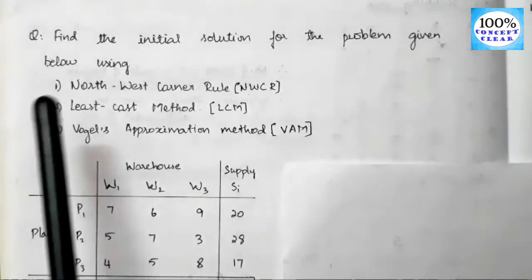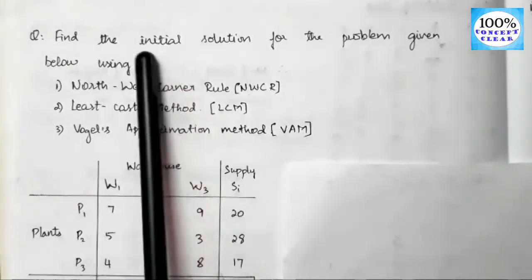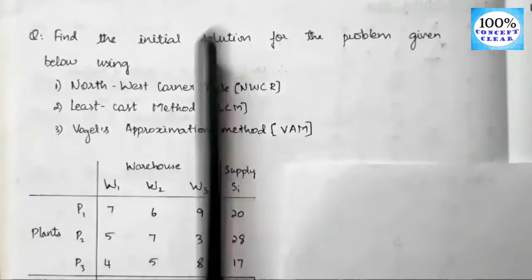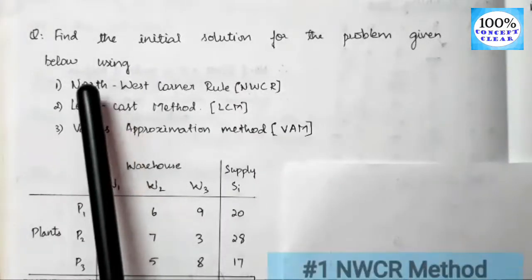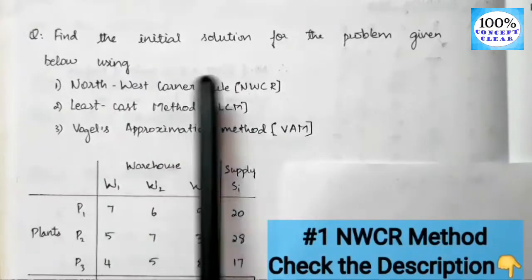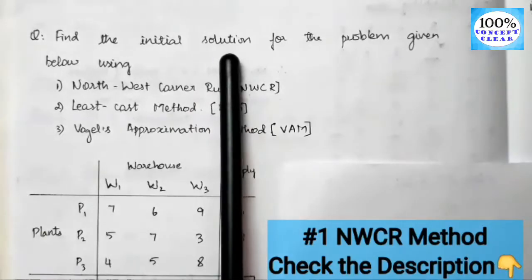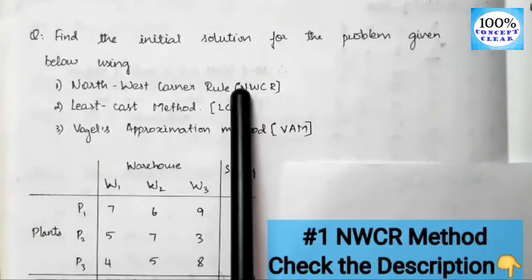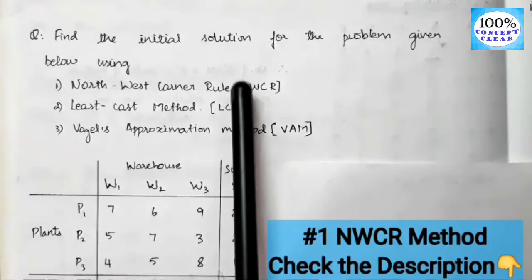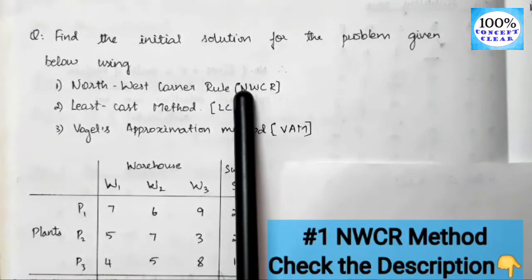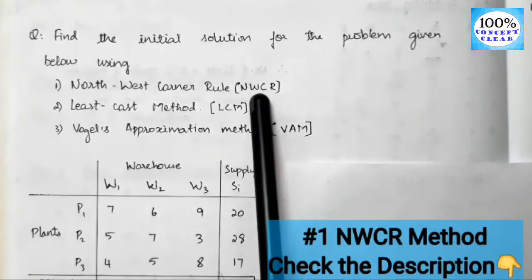In this video, we will see how to use the least cost method to find the initial solution. The north-west corner rule was used to get the initial solution in a previous video — you can see the link in the description.